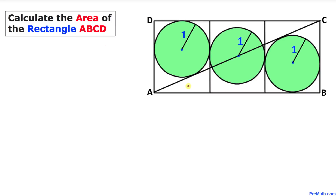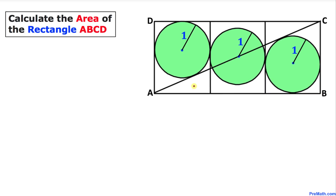Welcome to pre-math. In this video tutorial we have three identical circles with radius one that are tangent to each other, and moreover they are inside this rectangle ABCD. Now we are going to calculate the area of this rectangle ABCD. Let's go ahead and get started with the solution.